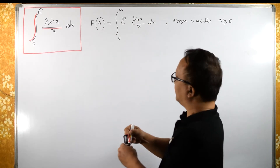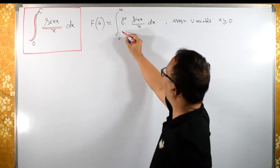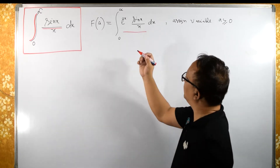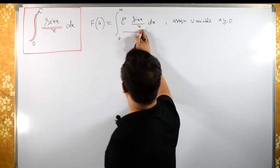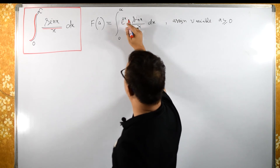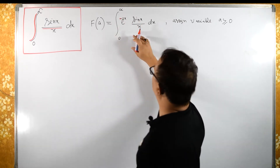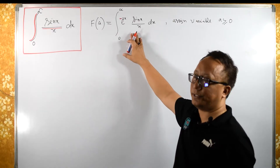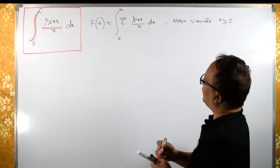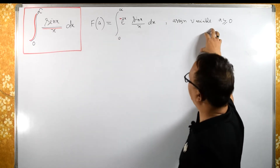Now look at this integral — it is not convergent. In order to make it convergent, I need to bring this down, so I need to write a minus here. Therefore this integral becomes convergent. So now I am calling this f of variable a.